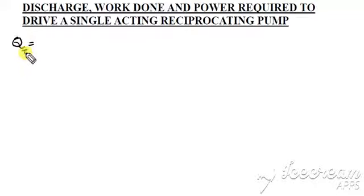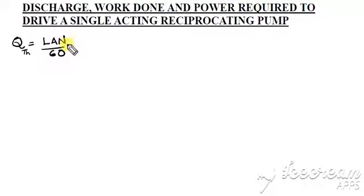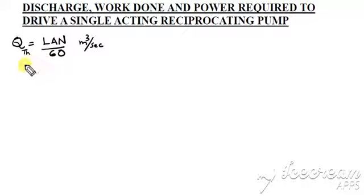We have already found the discharge expression for a single acting reciprocating pump. The theoretical discharge Q is equal to LAn/60, where L is the stroke length, A is the area of cross section of the piston or cylinder, and n is the rotational speed of crank in RPM. In SI units, the unit of discharge is cubic meters per second. For a double acting pump, it is approximately twice this value, that is 2LAn/60.